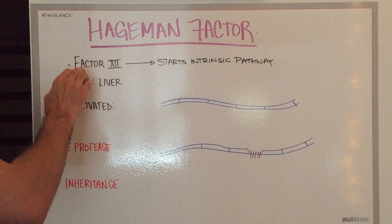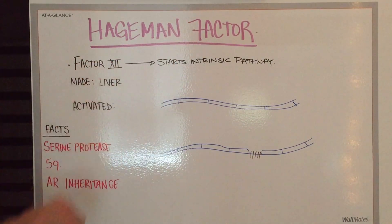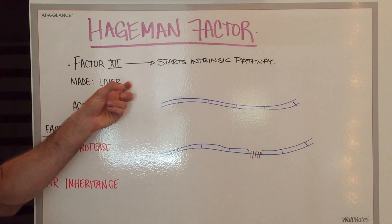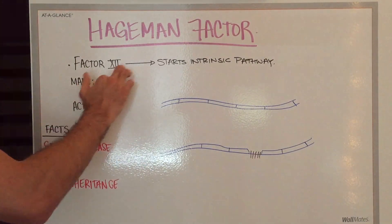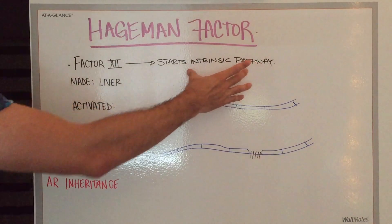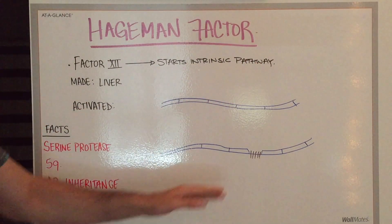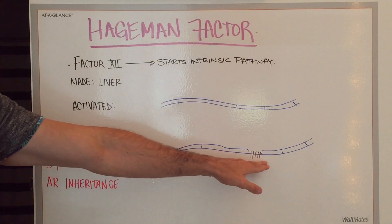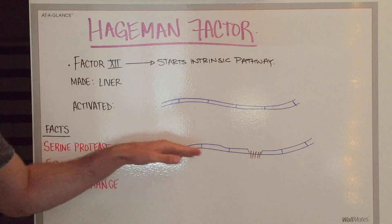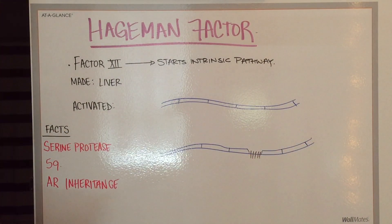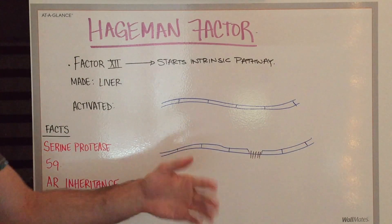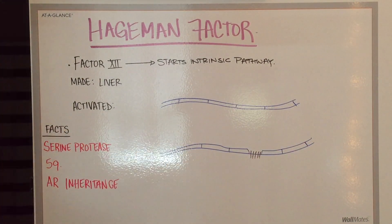The Hagman factor is commonly referred to as factor 12 and it is made in the liver. Factor 12 also starts the intrinsic pathway, which is defined as endothelial breakage within the blood vessels, which is different from the extrinsic pathway, which is initiated via trauma.